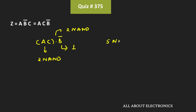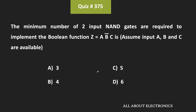In this way, total we require five NAND gates. Just by looking at the Boolean expression, we can find the required number of two-input NAND gates. To implement this Boolean expression we require minimum five NAND gates, and therefore option C is the correct answer.